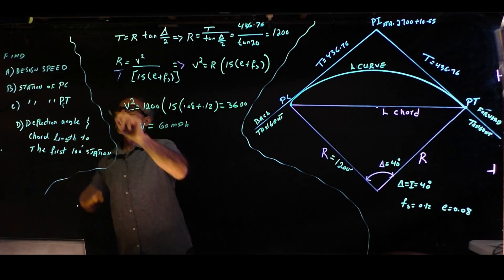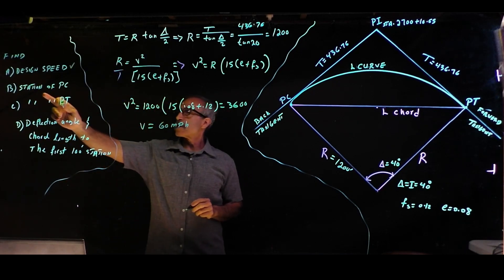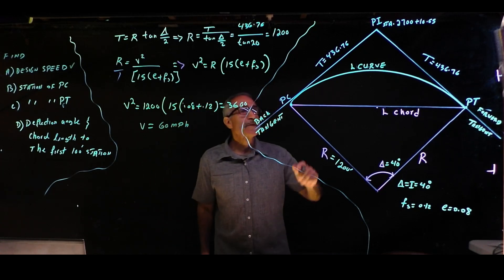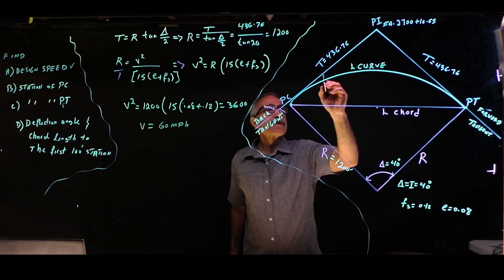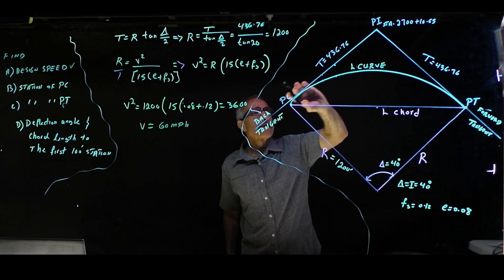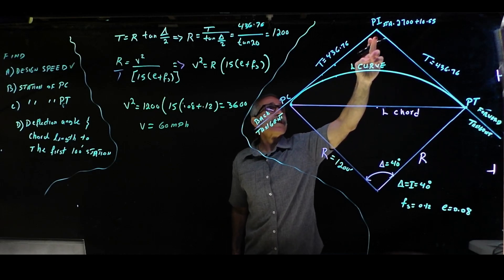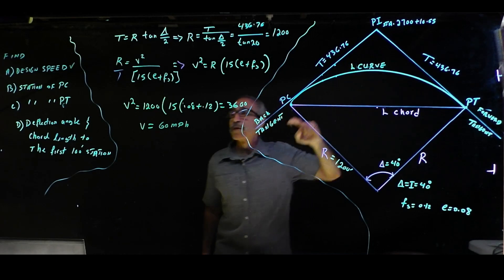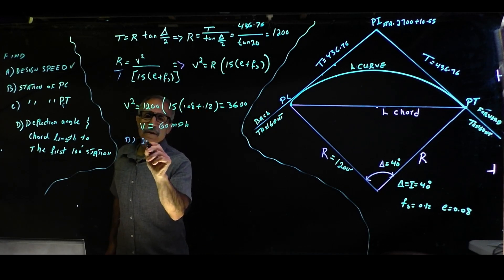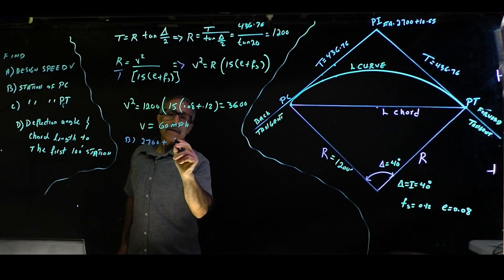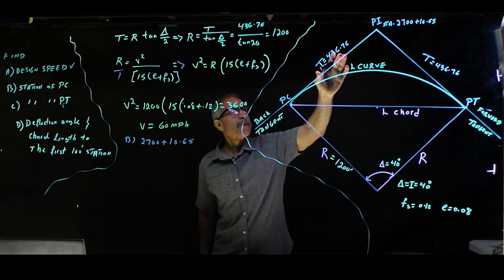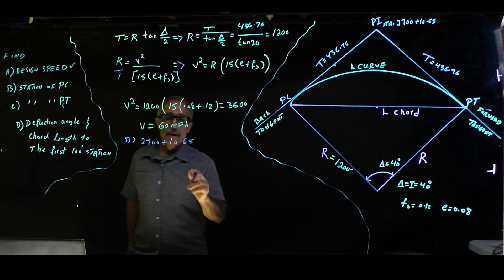That answers the design speed question. Now let's find the station of PC. The PI station is 2700 plus 10.65, and we subtract the tangent length of 436.76 to get the PC station.